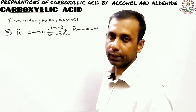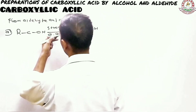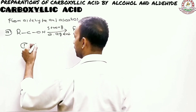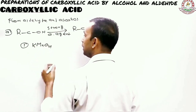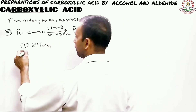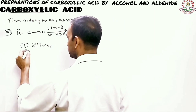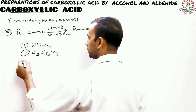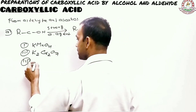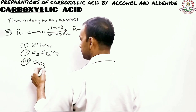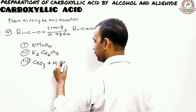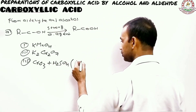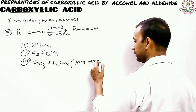This conversion proceeds through the aldehyde also. Now the question is: what can this strong oxidizing agent be? The first option is KMnO4. Apart from that, you can also use K2Cr2O7 — potassium dichromate is another option. And the third option is chromic oxide, CrO3, along with a small amount of sulfuric acid.